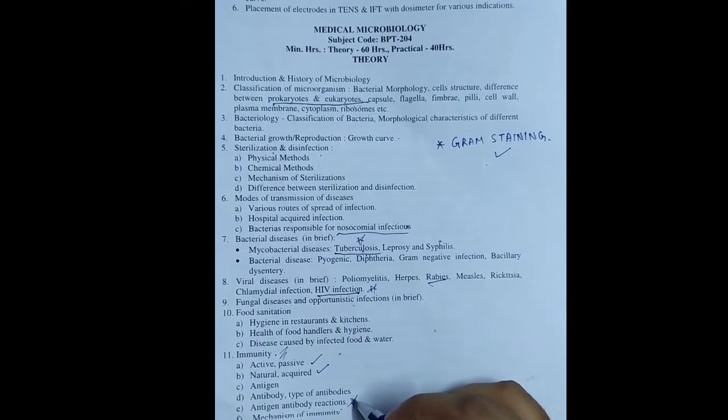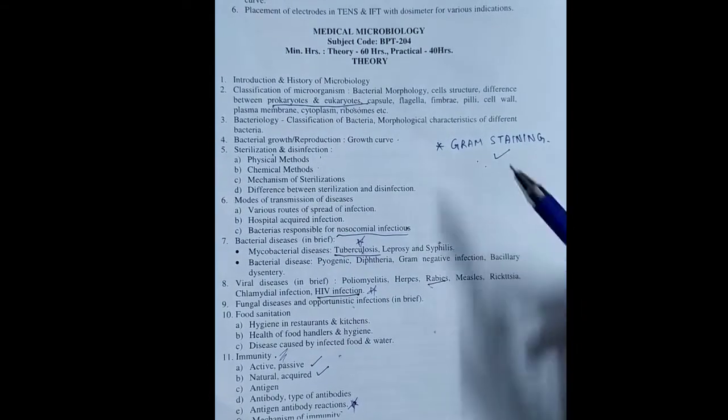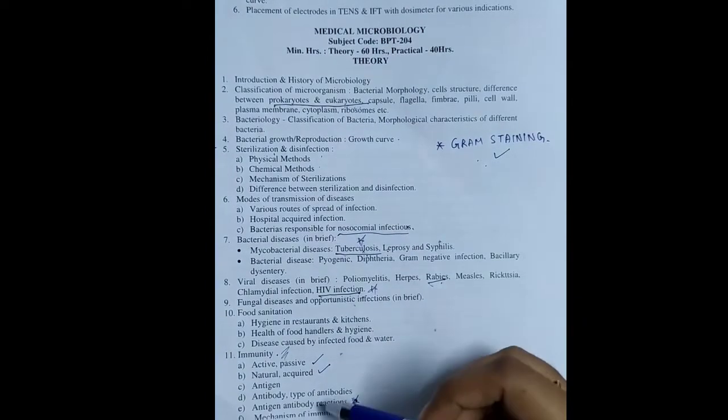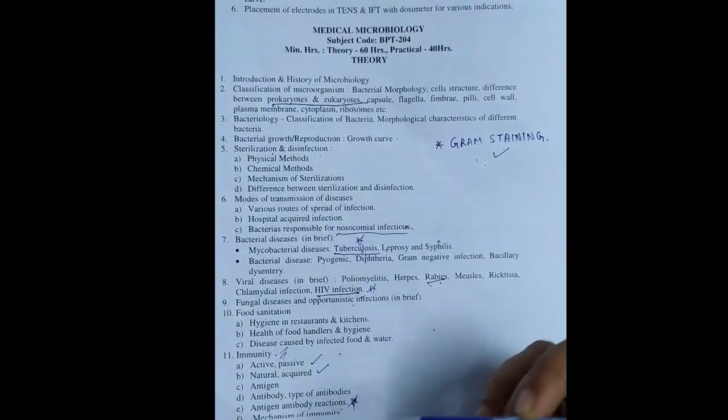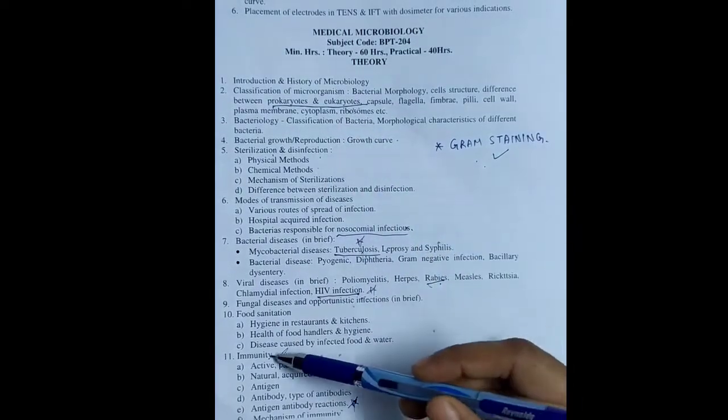So if I repeat the important questions: gram staining, nosocomial infection, tuberculosis, HIV infection, rabies, and antigen-antibody reaction. If I talk about differences: prokaryotes and eukaryotes, and active, passive, and natural acquired - there are a lot of differences.